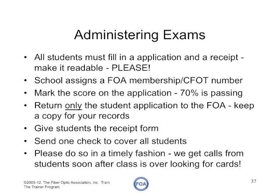Because we often get applications that are unreadable, we prefer that schools use the electronic forms for submitting applications. Assign a membership number — your three-digit school code plus a four-digit student number. Mark the score in the application; for all FOA exams, 70% is considered a passing grade. Return only the student application to the FOA and keep a copy for your records. Shred the tests so they don't get passed around. Give your students the receipt form and send one check to cover all students.